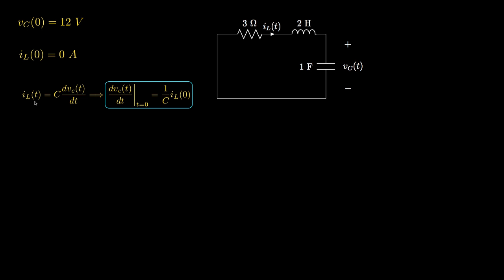The current through a capacitor is the capacitance times the derivative of the voltage across it. So the derivative of the voltage across this capacitor at t equals zero is the reciprocal of the capacitance times the current through it at t equals zero, which is the inductor current at t equals zero.